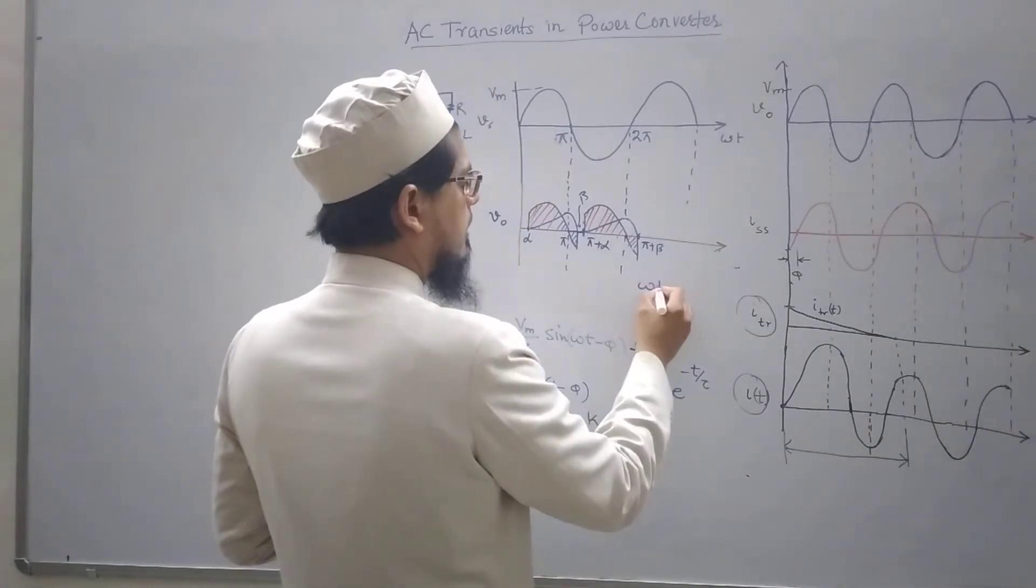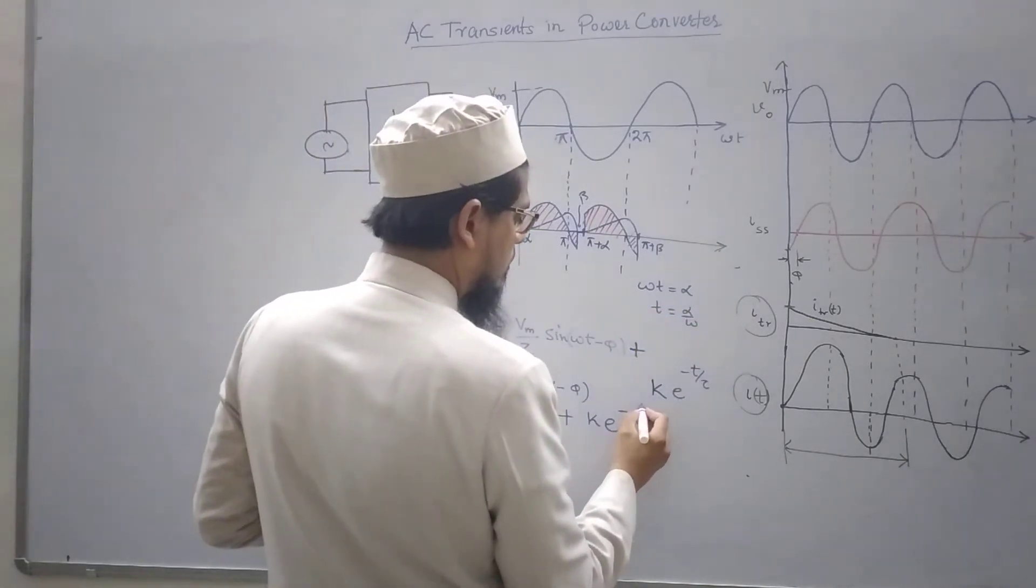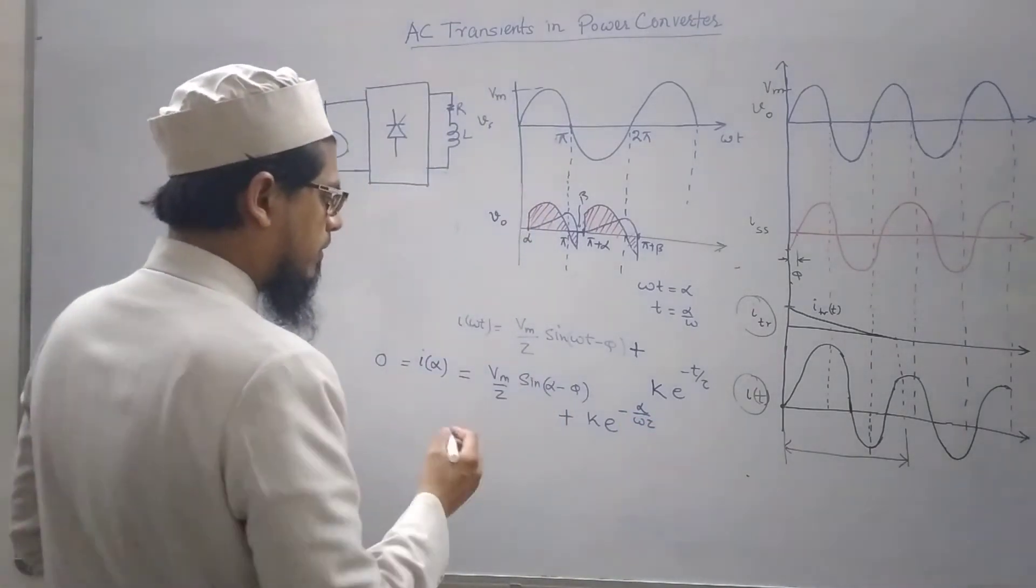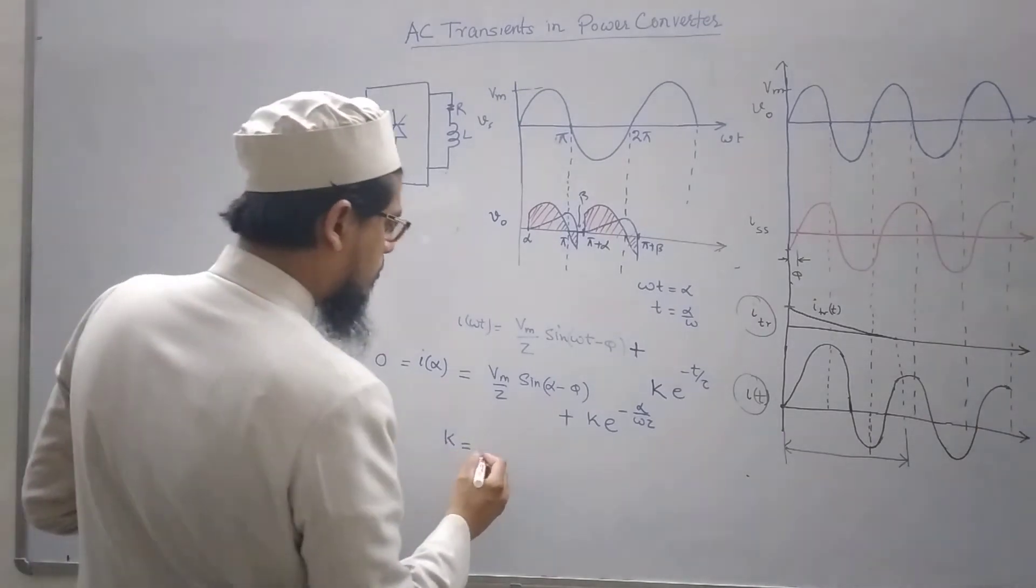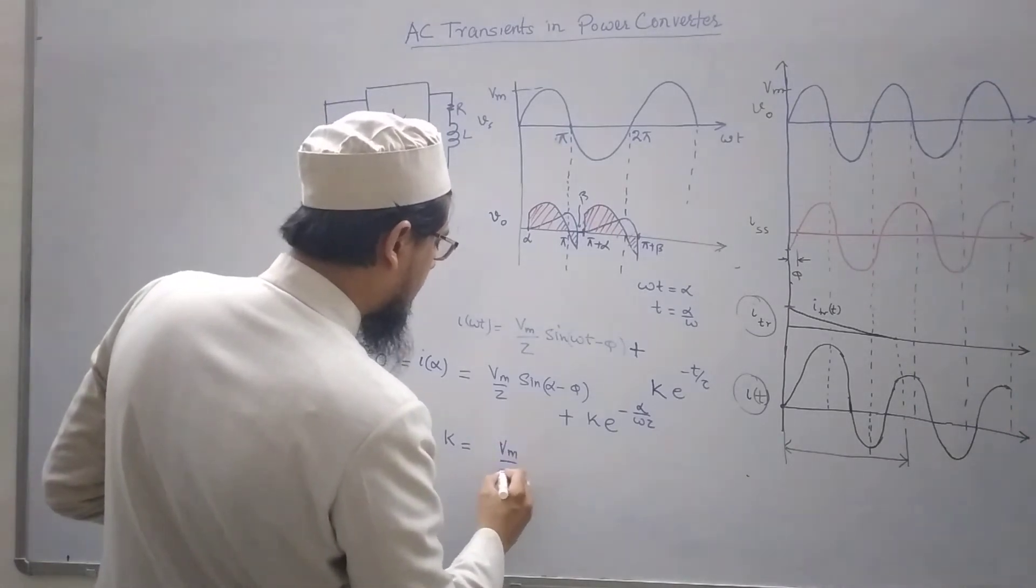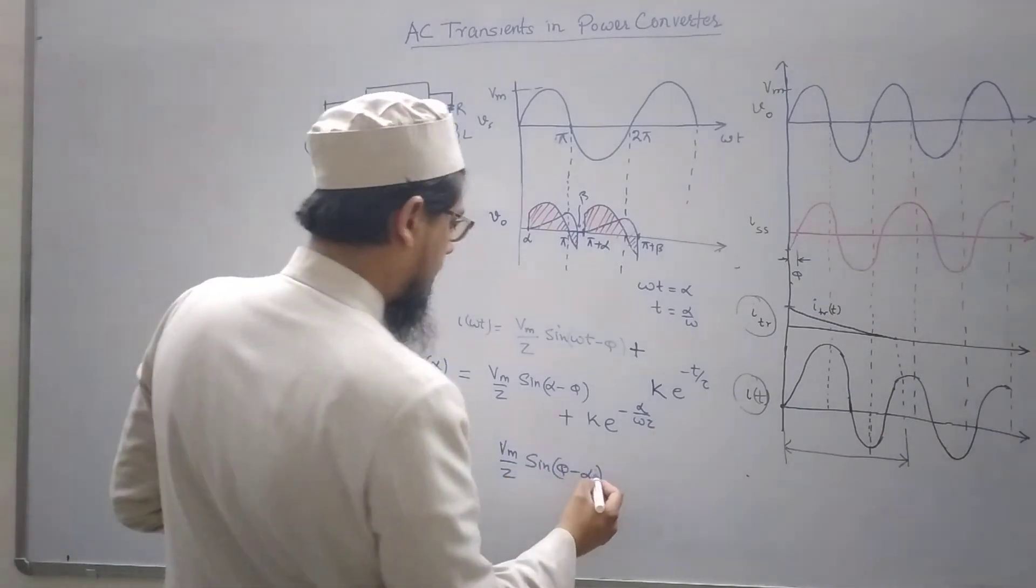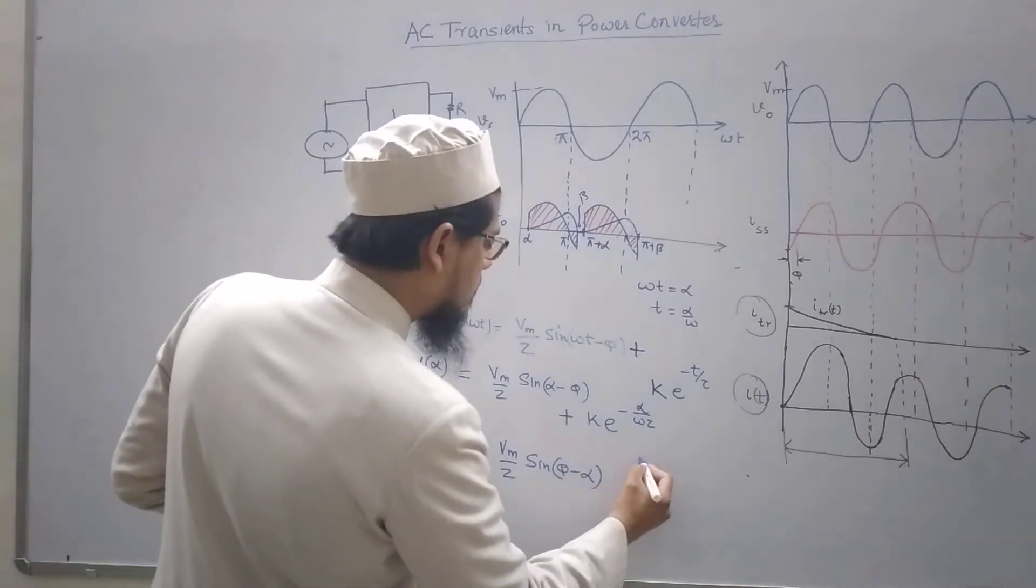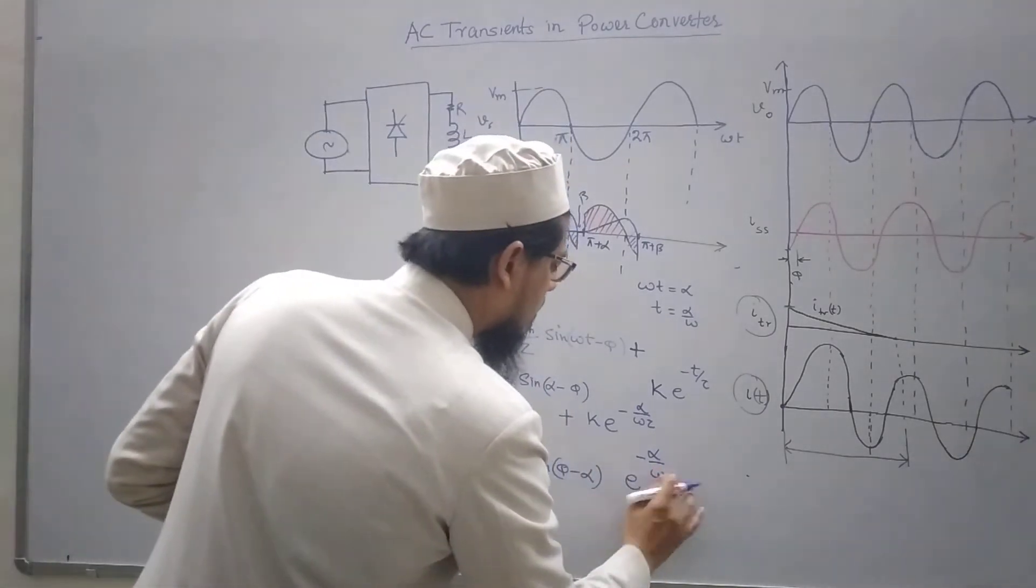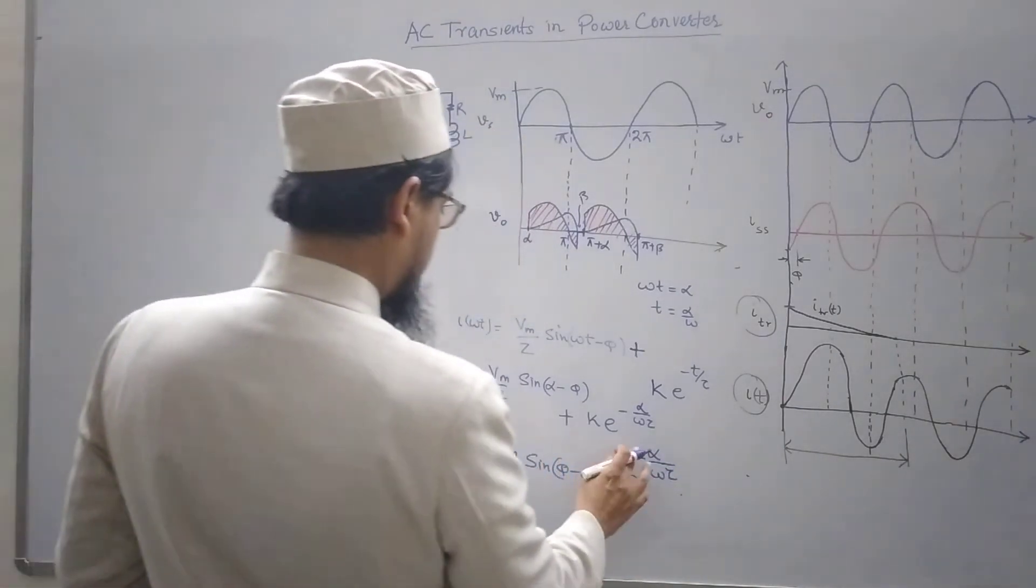What about t? Omega t equals to alpha so that gives t equals to alpha by omega. So I put it here alpha by omega tau. Now I can find out the value of k here. K equals to it would be Vm by z sin phi minus alpha times e to the power minus alpha by omega tau. This is tau not z, this is tau, rather it would be positive.